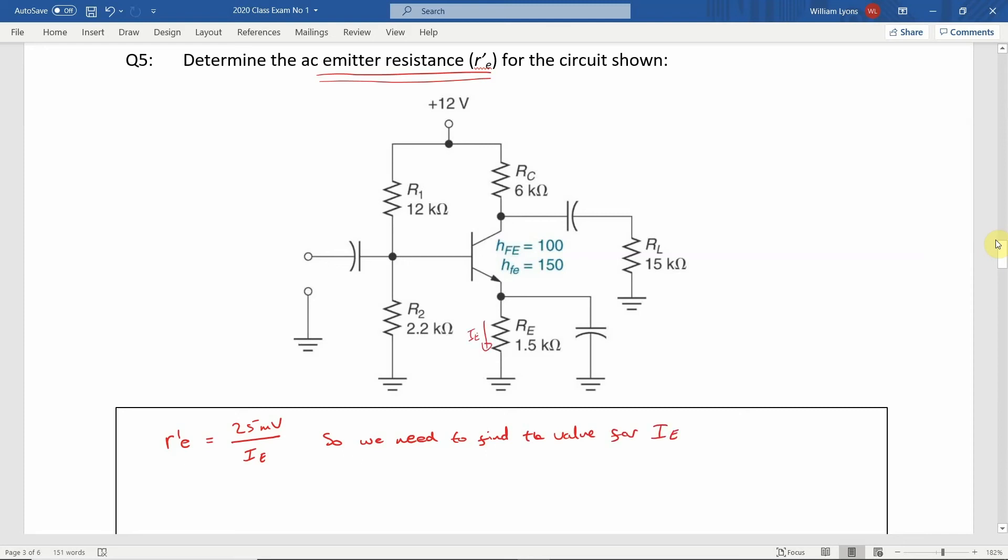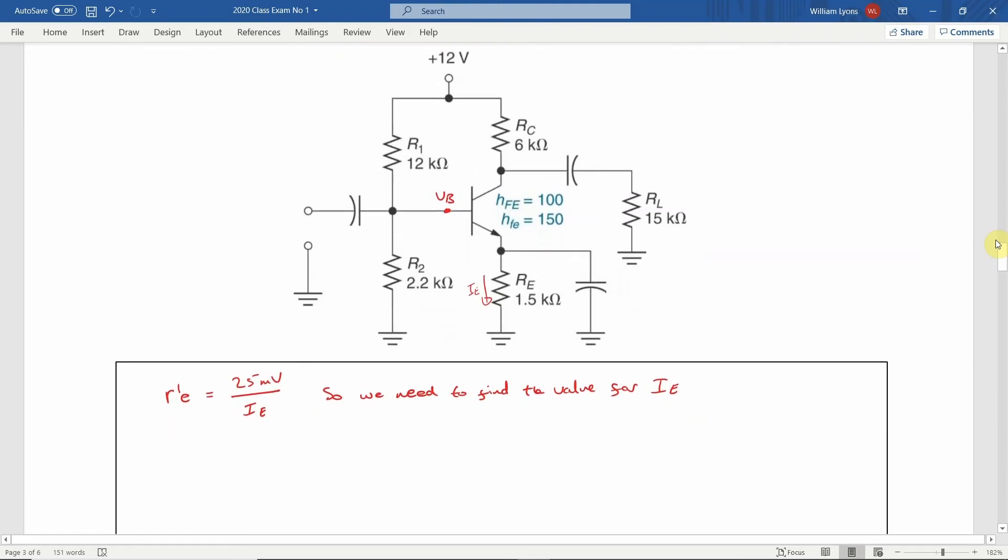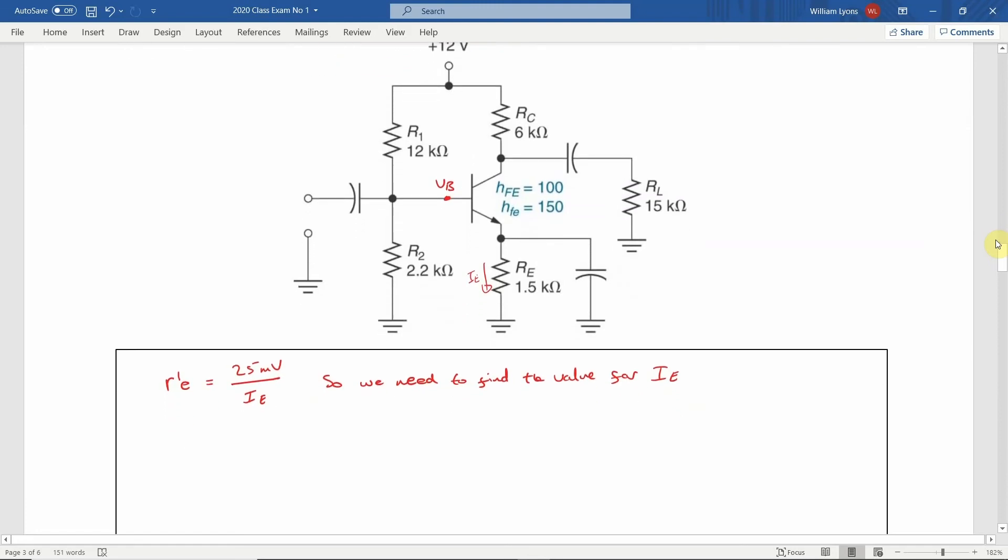Let's first calculate the value for VB, the voltage at the base. Looking at the left hand side of the circuit, we have a 12V supply and two series resistors R1 and R2 connected to ground, with the voltage VB between the two resistors.